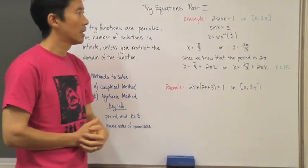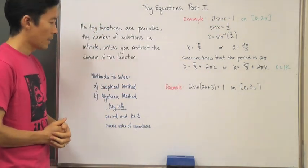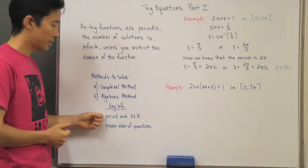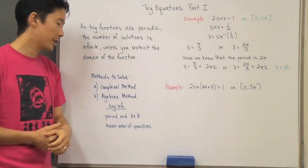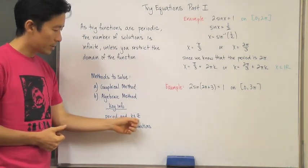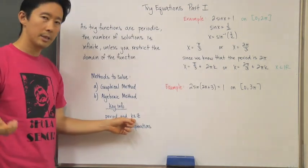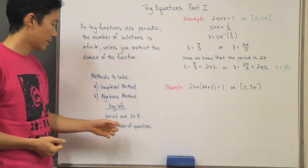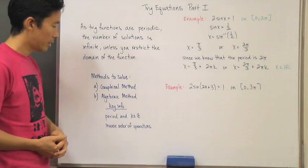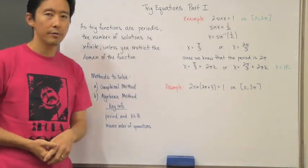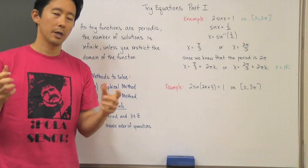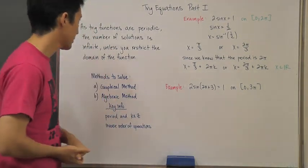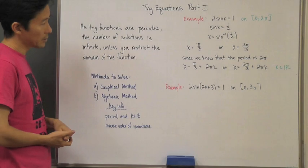There's some key info we want to keep in mind. One is: what is the period of the function that we're dealing with? And two, this parameter k — which I'll explain a little more later — has to be an integer. We also need to remember what inverse order of operations refers to in regards to understanding how to solve for a particular value of x.